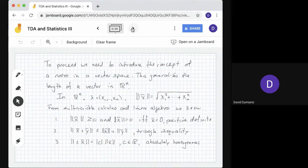To proceed, we want to introduce the concept of a norm. The norm in a vector space is based on the idea of length in Euclidean space Rⁿ. If we have a vector x = (x1,...,xn), the length of x is the square root of the sum of squares of the entries.